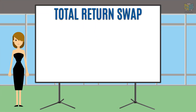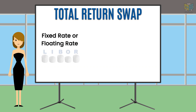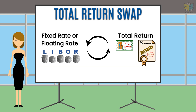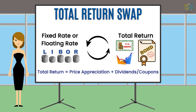In this swap, one party pays a fixed or a floating rate of return in exchange for the total return generated by a reference asset. The reference asset can be an equity share, a bond, an index, etc. The total return includes all sorts of income and returns generated by the asset, that is, coupons, dividends, and capital gains.